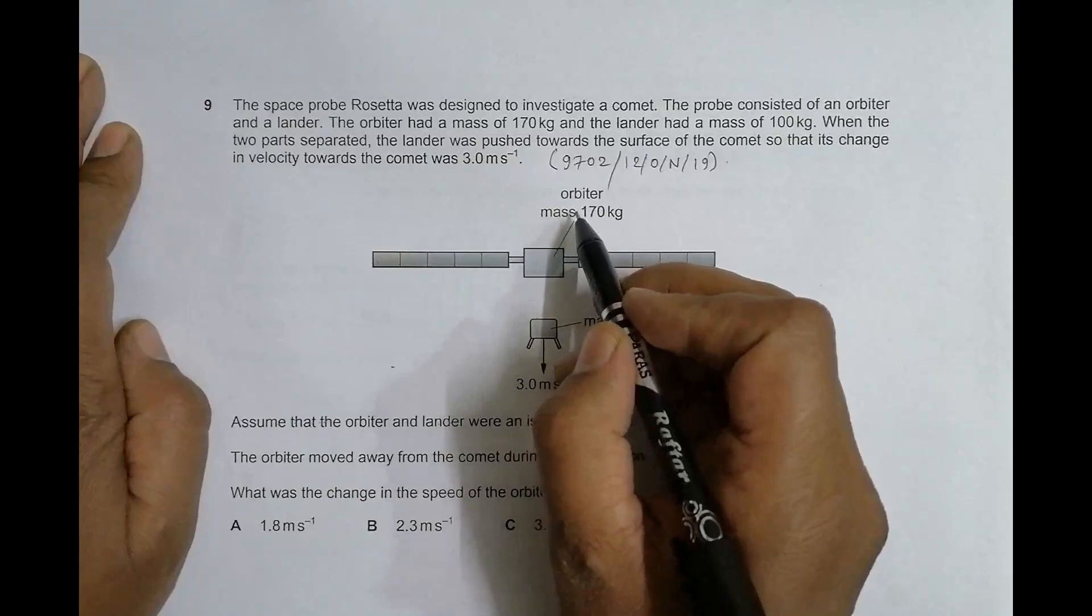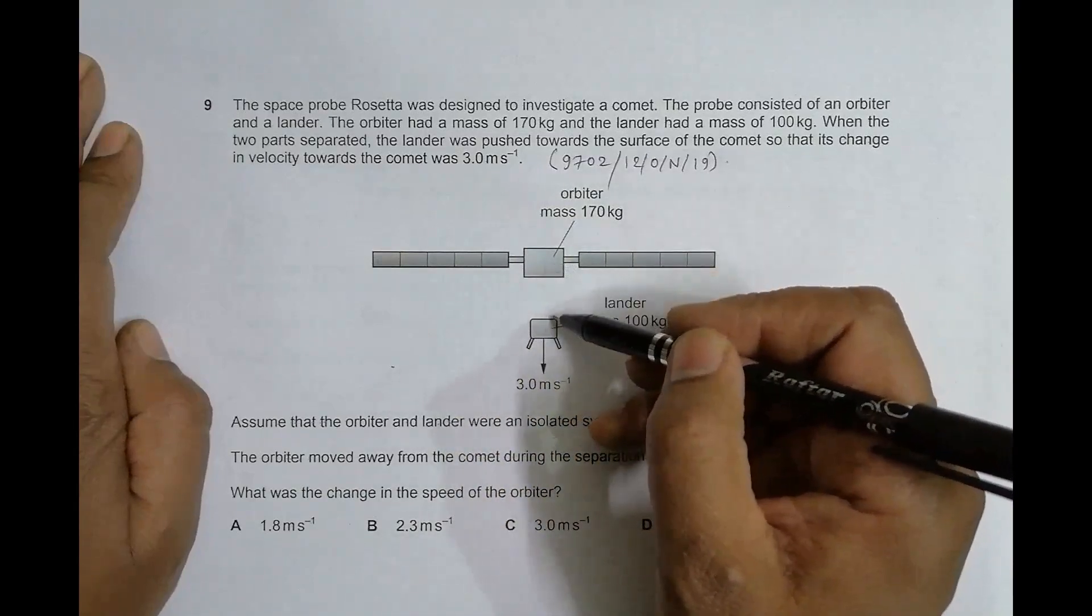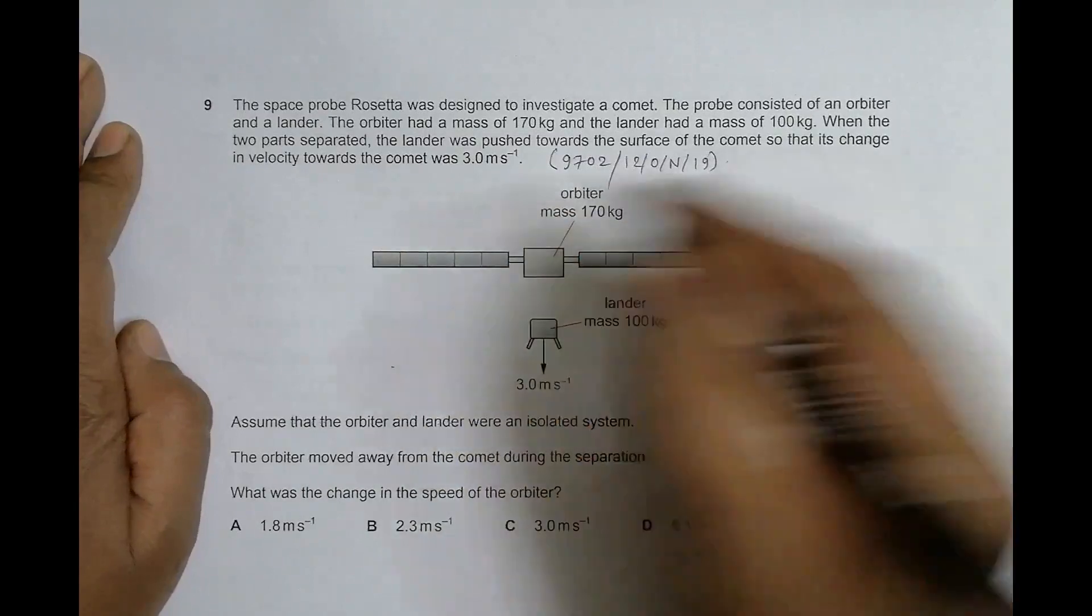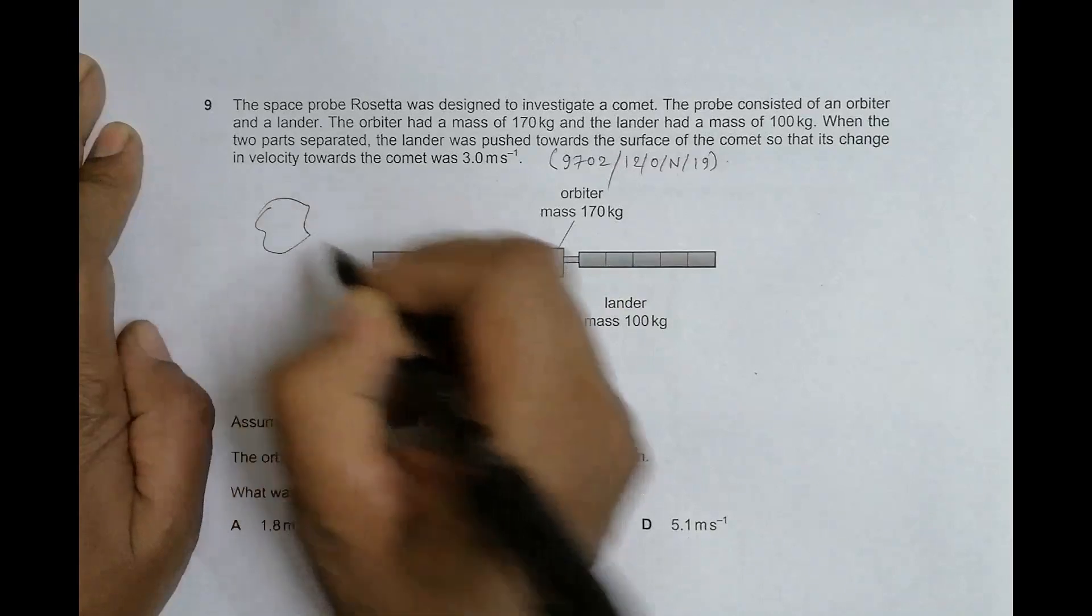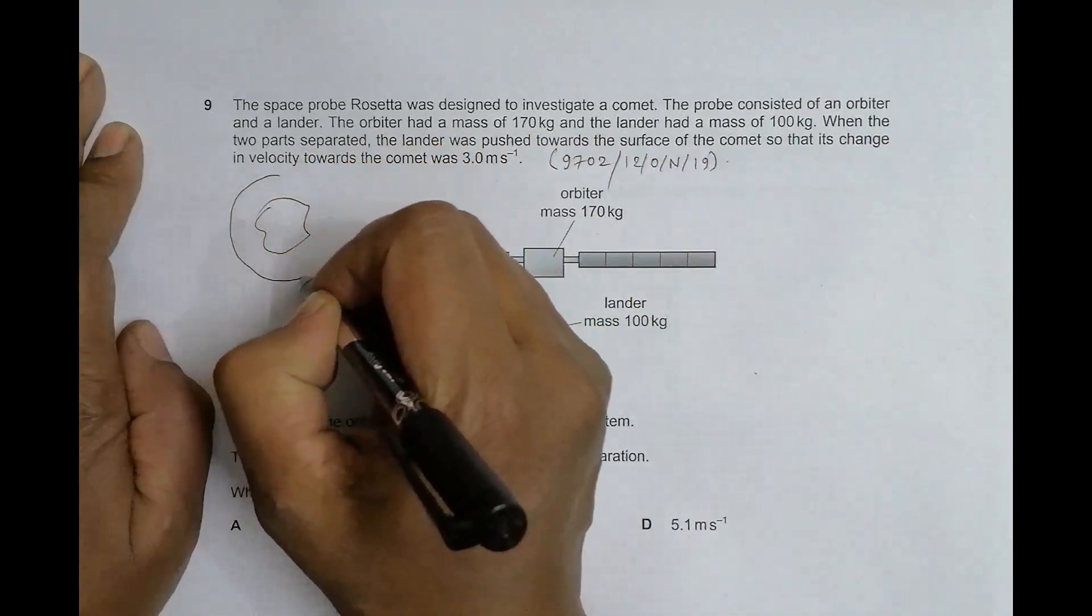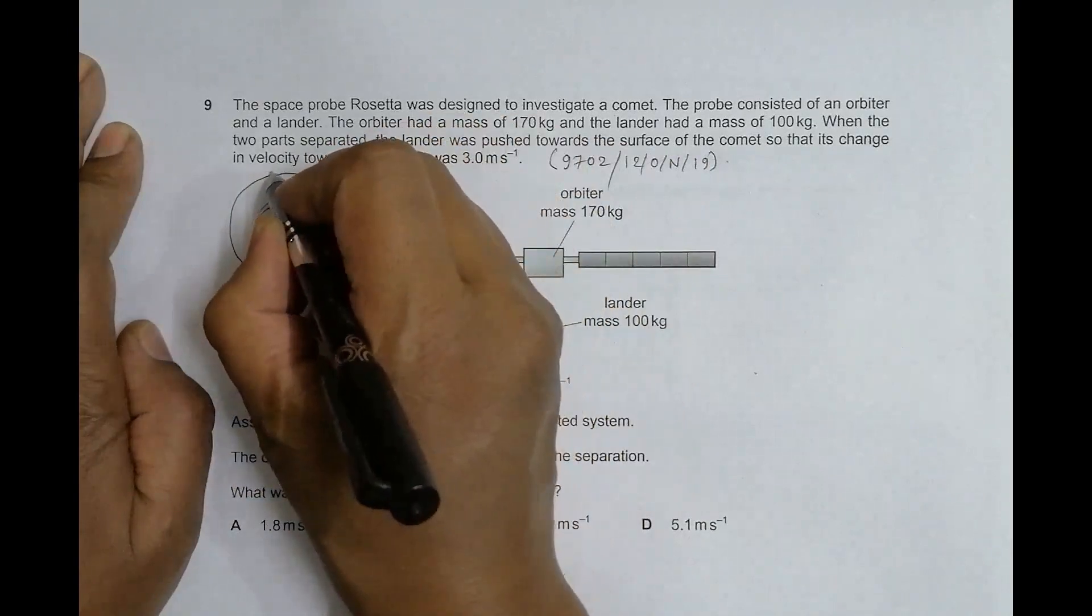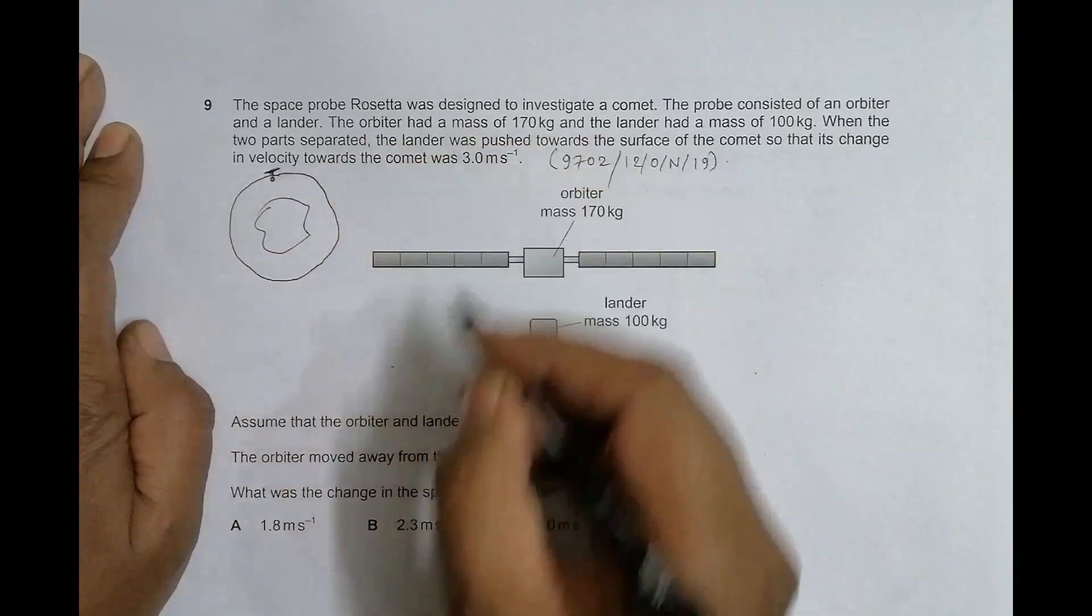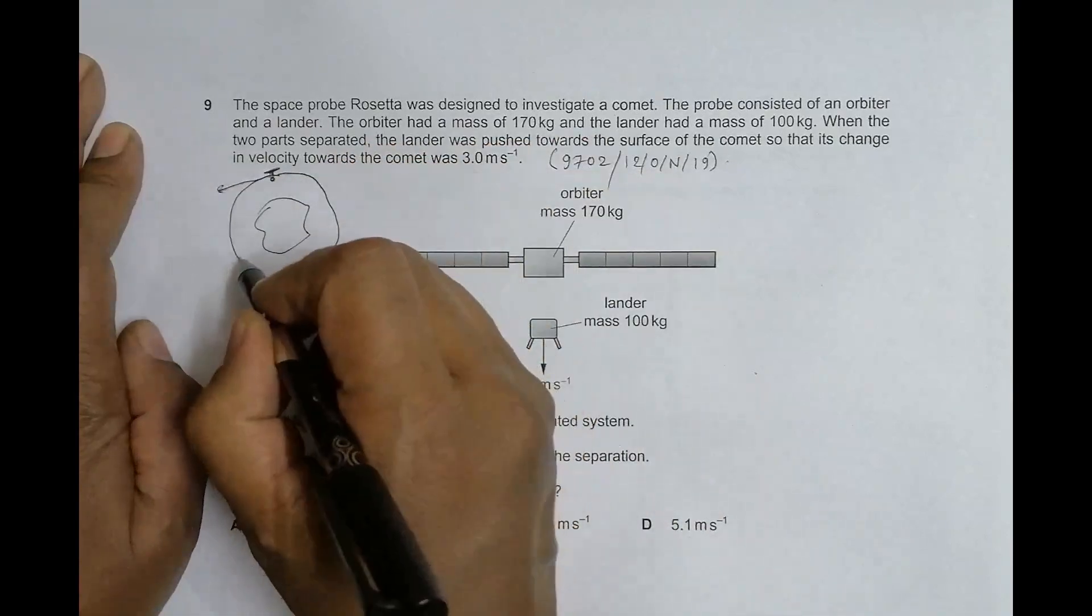This is the orbiter which orbits, and this is the lander which has to separate and land on the surface. If I have the comet like this, the orbiter and lander will be moving somewhat tangentially. This is the orbiter and this is the lander, moving in an anti-clockwise direction.